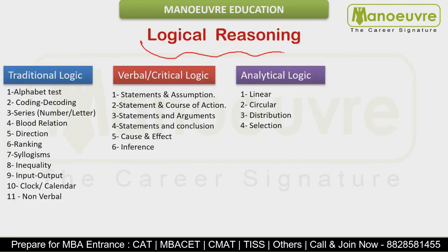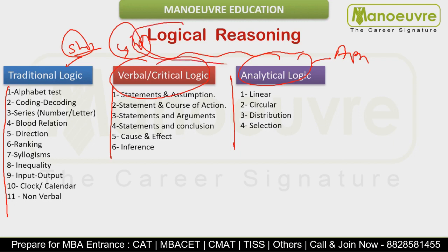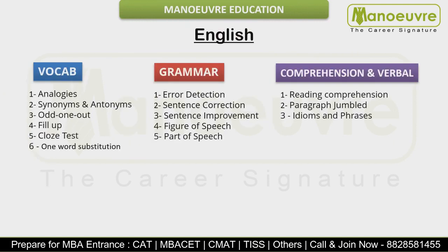Second is Logical Reasoning. Logic is the most scoring section, provided you know the shortcuts for traditional reasoning. Verbal critical reasoning understanding acchi honi chahiye, analytical approach accha hona chahiye — ye saare topics hain jo aapko acche se prepare karne hain. Logic is a section jo aapne school ya college mein nahi padha, but it is easy and scoring if you prepare and practice the topics well. Definitely yahan pe score banega.